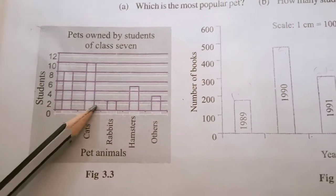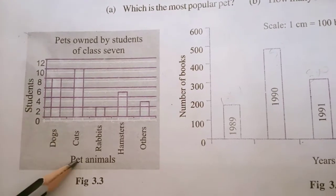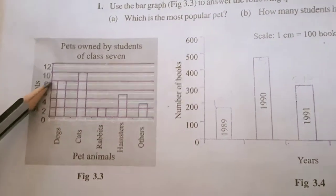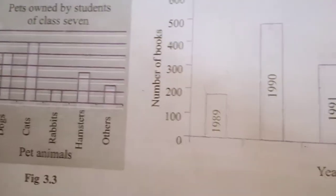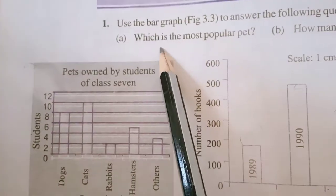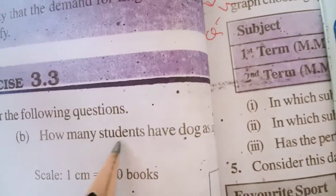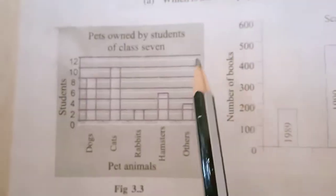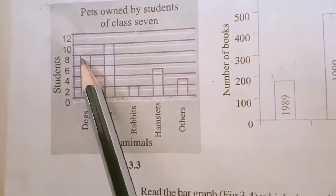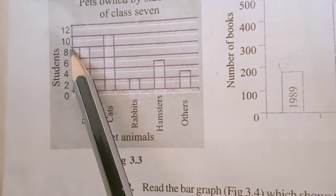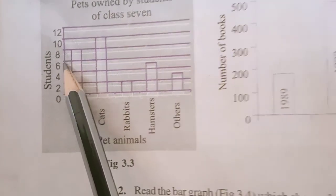Now the question related to this: which is the most popular pet? See which column is the highest. This cat column is the highest having the range 10. The most popular pet is cat. Second question: how many students have dog as a pet? See dog is here, the line represents 8. The answer is 8 children have a dog as a pet.